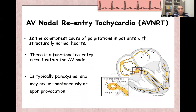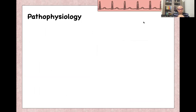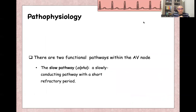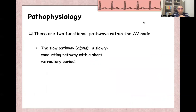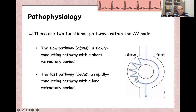It happens typically paroxysmal — maybe provoked, or maybe spontaneous onset. It's a re-entry circuit, and there are two functional pathways within the AV node. The slow pathway is the alpha pathway — a slowly conducting pathway with a short refractory period. The second pathway is the fast pathway, or beta pathway — a rapidly conducting pathway but with a long refractory period.